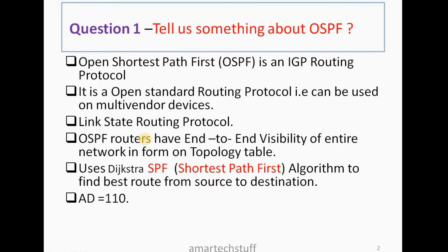Question number one: tell us something about OSPF. When this question comes, you need to give an introduction about OSPF — what OSPF is. OSPF is basically an IGP routing protocol and it is an open standard routing protocol, meaning it can be used on multi-vendor devices such as Cisco, Juniper, and Huawei routers.